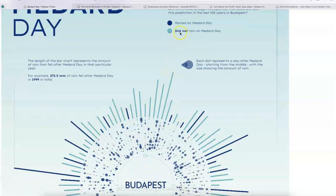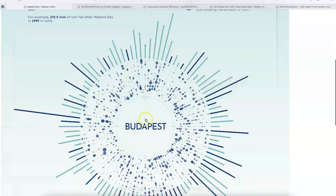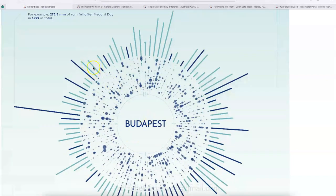They are showing how accurate was this prediction in last 100 years in Budapest. So what does legend mean? If you have this dark blue, then rained on Medard Day. If it is a lighter one, then did not rain on Medard Day.